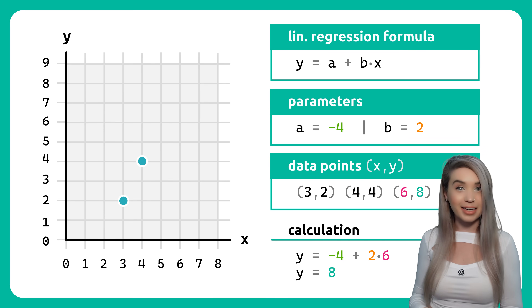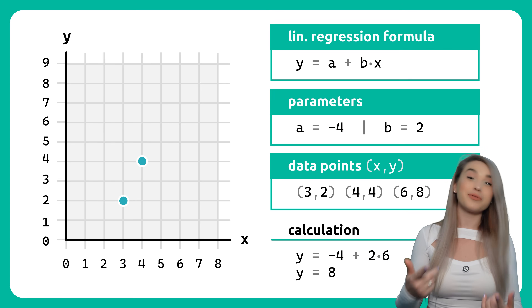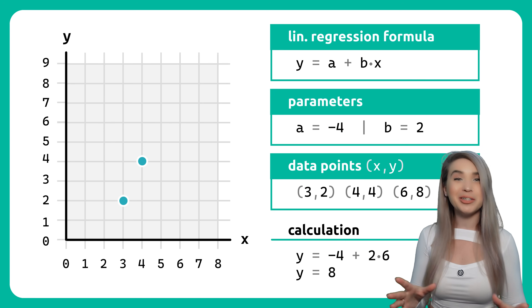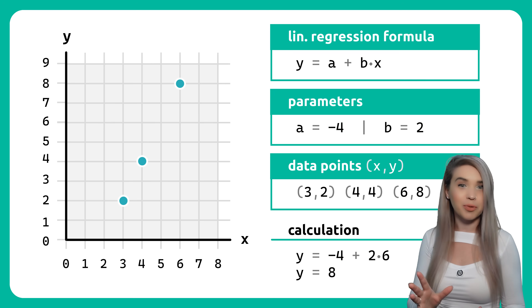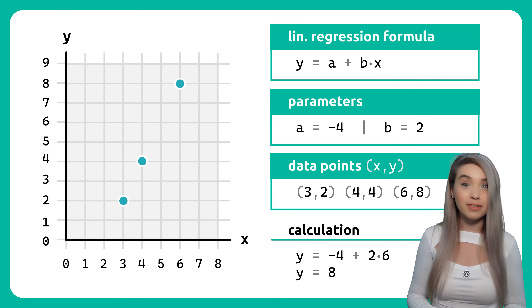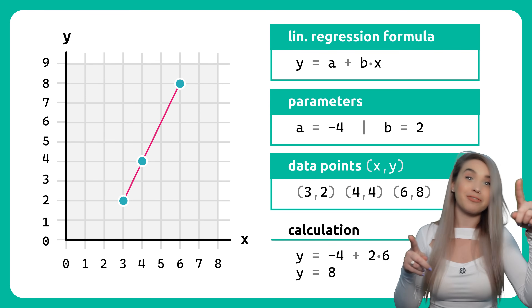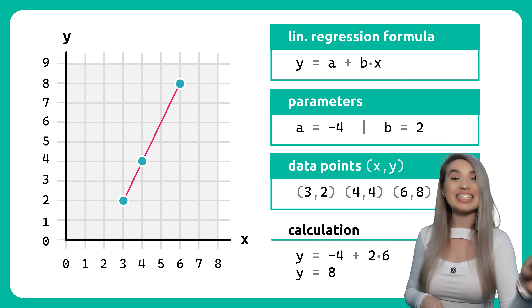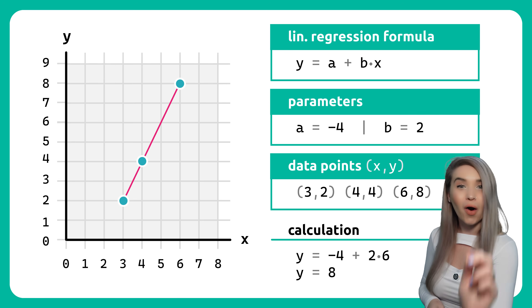This gives us the y of 8. Then if we draw our new 6 by 8 data point on the graph, we see that our imaginary line from earlier is exactly spot on.